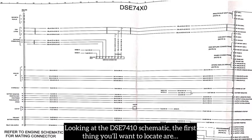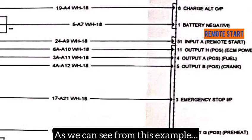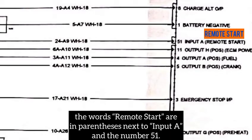Looking at the DSC 7410 schematic, the first thing you'll want to locate are the words "remote start" in the column to the right. As we can see from this example, the words remote start are in parentheses next to input A in the number 51.